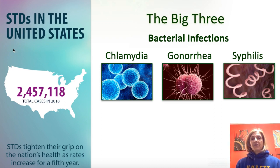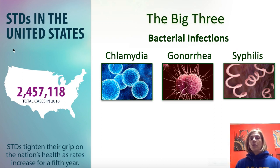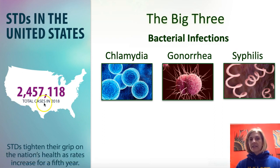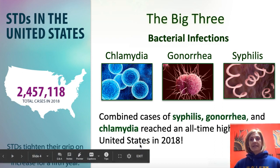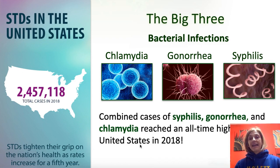Looking at the three bacterial infections today — the big three: chlamydia, gonorrhea, and syphilis. Chlamydia is the number one sexually transmitted infection in the United States. We have been raising our numbers of cases progressively for five years in a row with these three bacterial infections, to the point where we have over 2 million cases. Combined cases of syphilis, gonorrhea, and chlamydia have reached an all-time high in the United States.